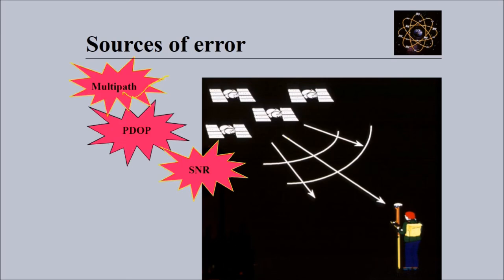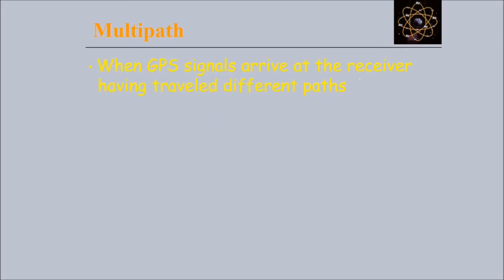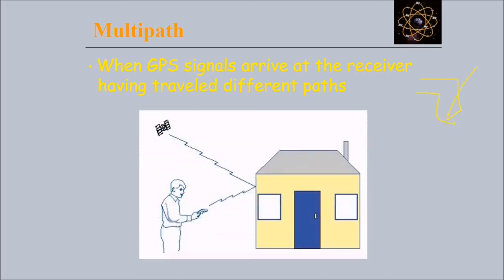Other sources of error you can have: multipath error, PDOP, and SNR signal-to-noise ratio. Multipath is when GPS signals arrive at a receiver driving different paths - one can come here, one can come here, one can come directly.